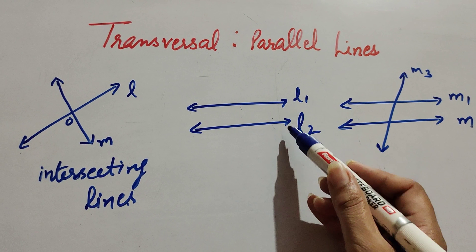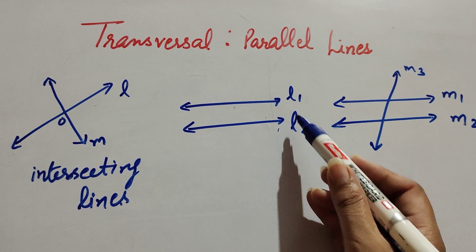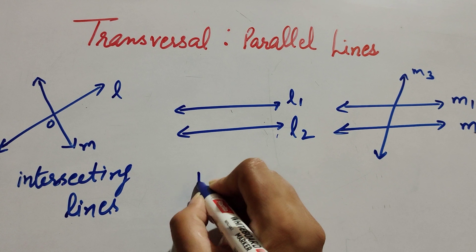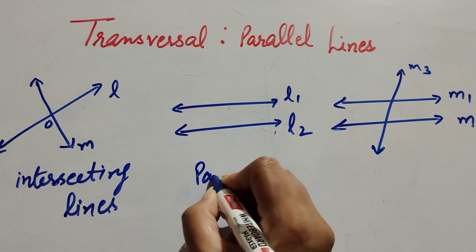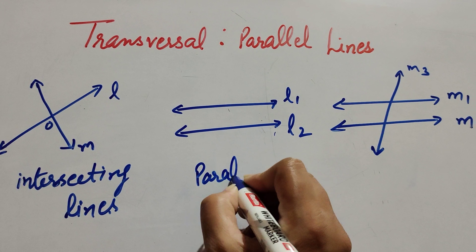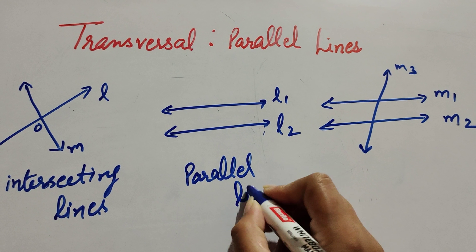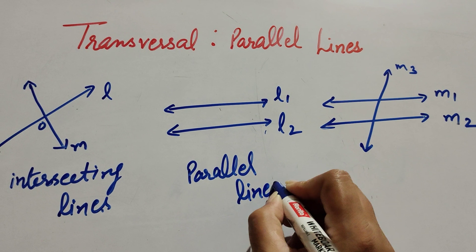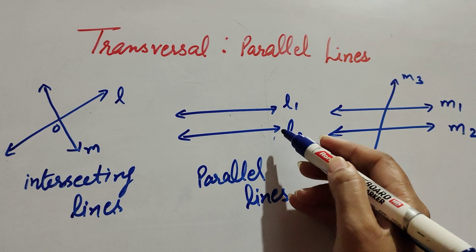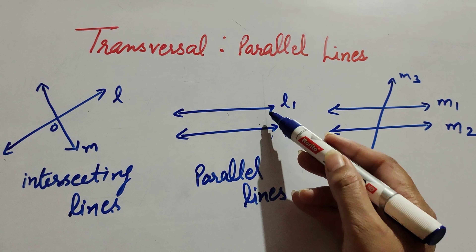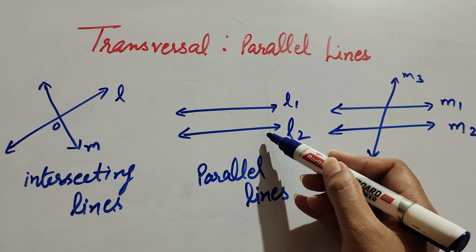In this second pair, there are two lines l1 and l2. These lines are known as parallel lines, because parallel lines never cross each other — these lines never intersect.